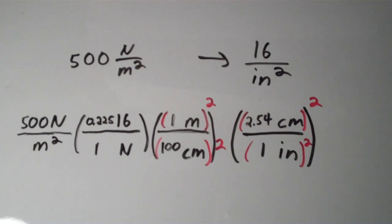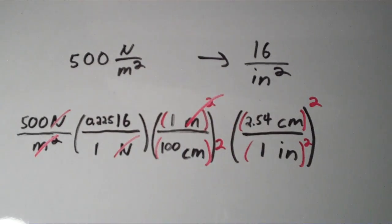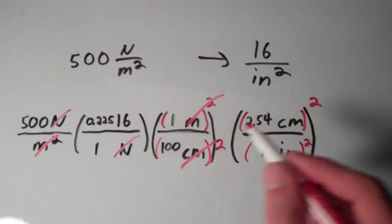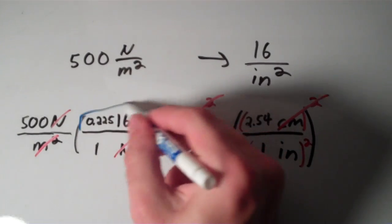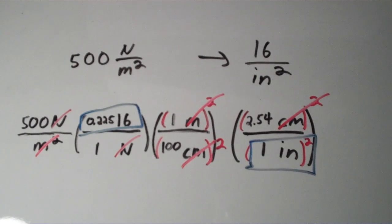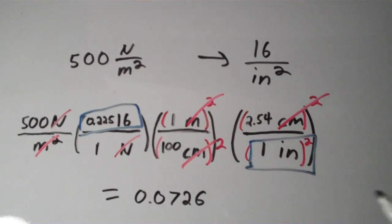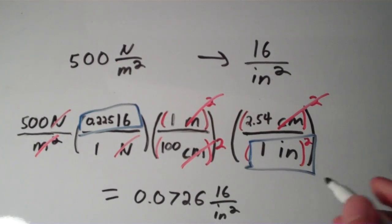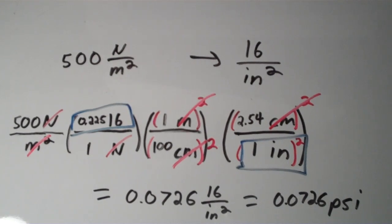Now it's just a matter of checking that the units cancel and we end up with pounds per square inch. Newtons cancel out, meters squared cancels, and the square centimeters cancel. We're left with pounds on top and square inches on the bottom. Crunching all the numbers together, you end up with approximately 0.0726 pounds per square inch — or 0.0726 psi. And there you go — that's how to convert between a couple of different pressure units.